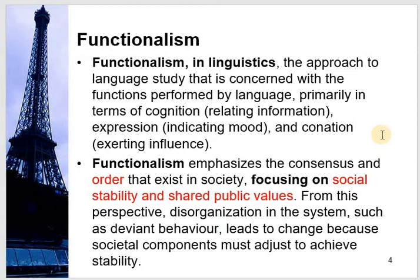For example, Shakespearean tragedies create a tragic mood on listeners and readers. If you read Oedipus Rex by Sophocles, this is the perfect specimen of tragedy; when a person reads it for the first time, the person starts weeping because of its extreme intensity of tragedy. And connotation — language serves the purpose of connotation, meaning how does it exert influence? Functionalism emphasizes the consensus and order that exists in society, focusing on social stability and shared public values. From this perspective, disorganization in the system, such as deviant behavior, leads to change because societal components must adjust to achieve stability.